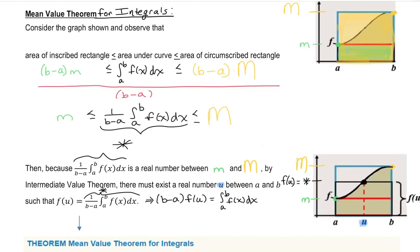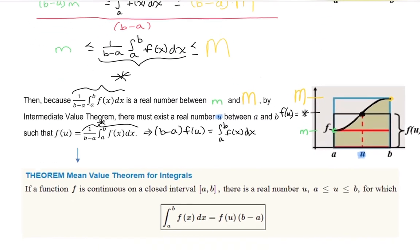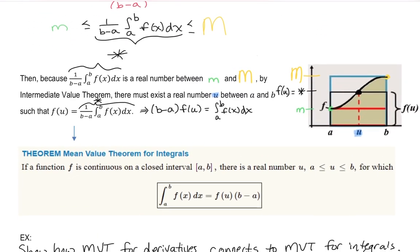The mean value theorem for integrals says: if a function is continuous on a closed interval, it guarantees the existence of u — there must exist this real number u — such that the definite integral from A to B of f equals f of u times B minus A.